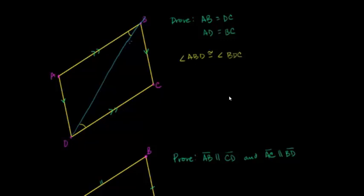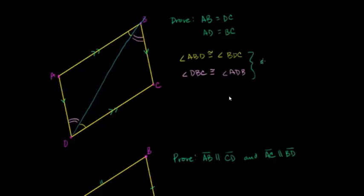You could also view diagonal DB as a transversal of the other pair of parallel lines, AD and BC. If you look at it that way, then angle DBC is going to be congruent to angle ADB, for the exact same reason — they are alternate interior angles of a transversal intersecting two parallel lines.